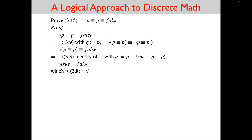That was how we have proved theorems up until now. But with this proof technique metatheorem we can do it a slightly different way. Instead of starting with the whole theorem, we start with just one side — 'not P equals P'. Our goal is not to get it to a previously proved theorem, but to get it to false, which is the right-hand side of 3.15. The proof proceeds very similarly. The first step uses 3.9 with Q replaced by P.